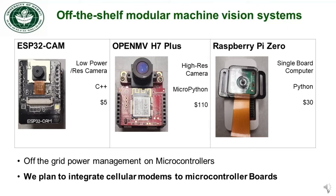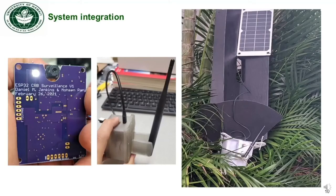We also have plans to integrate a cellular modem into the microcontroller boards, because in remote locations there is no Wi-Fi available. We have designed an integrated system with the ESP32 cam with a bright LED, power regulator, a PV panel charging a LiPo battery, external omnidirectional antenna, and embedded microphone. This integrated board is very economical and power efficient. Our next move is to add an LTE cellular modem to make it one package.